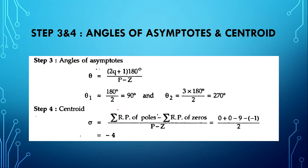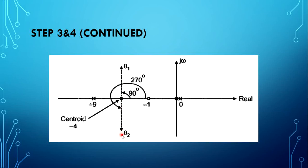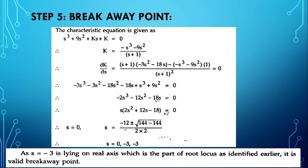The pole-zero plot and asymptotic lines are drawn. Two poles at origin, zero at -1, pole at -9. Centroid is at -4. From the centroid, one asymptotic line is at 90° (theta 1) and the other at 270° (theta 2). Asymptotic lines are drawn with dotted lines. Breakaway point step: as per general prediction, there is no breakaway point in this example — but this is a special case.